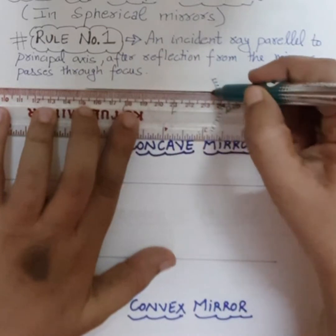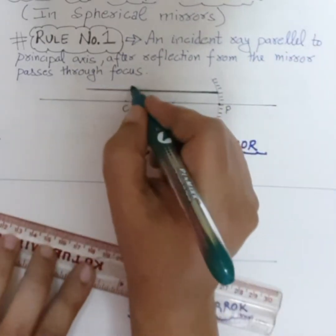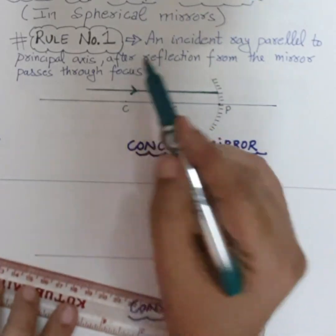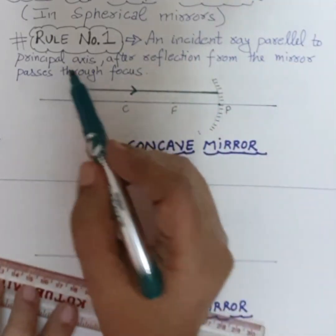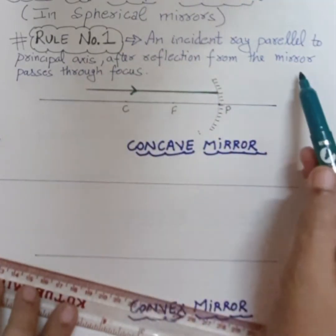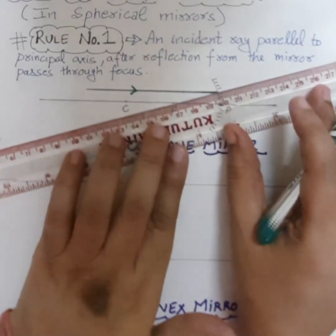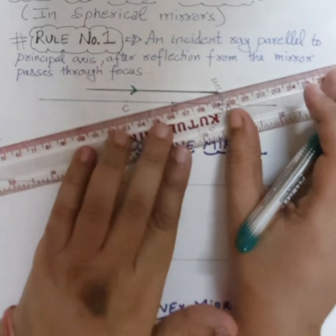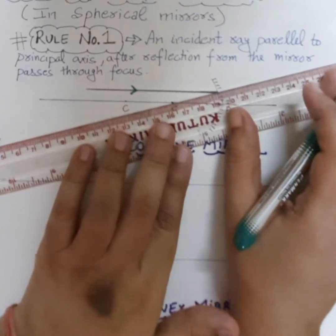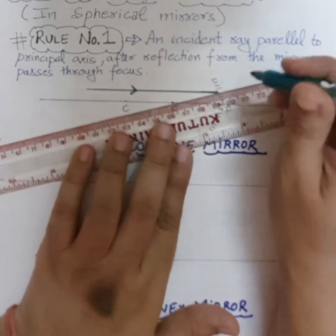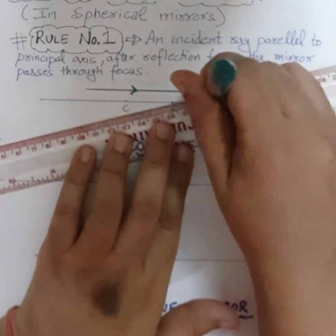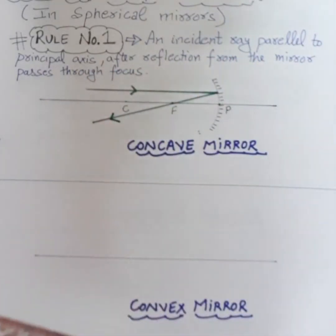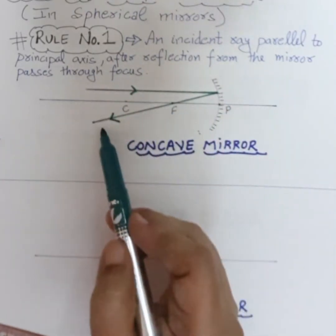This is the incident ray falling on the mirror. Rule number 1 says an incident ray parallel to the principal axis, after reflection from the mirror, passes through focus. So this is the focus and this is the incident ray. We join the point of incidence to the focus - this is the reflected ray. So the parallel ray passes through the focus.